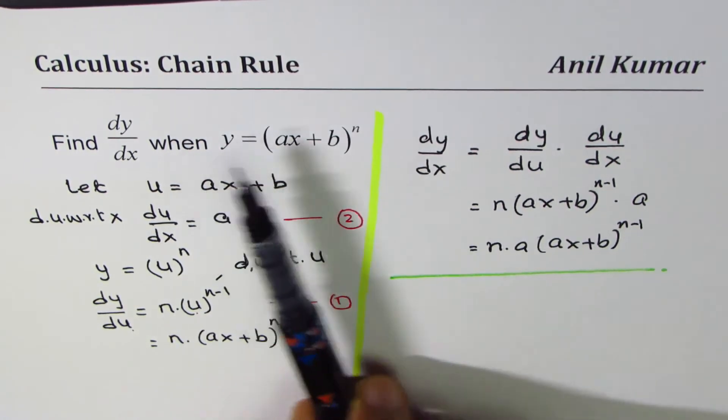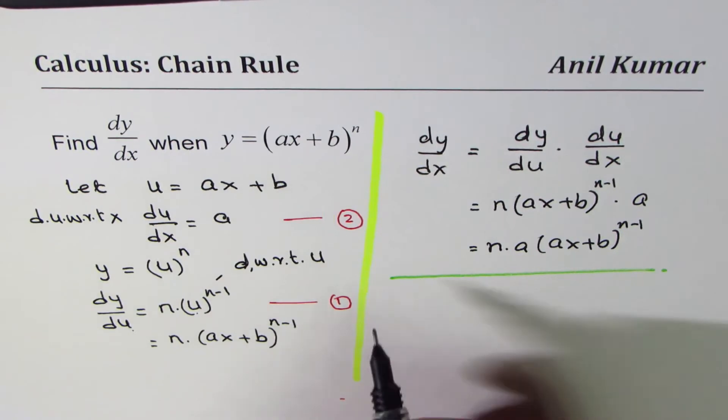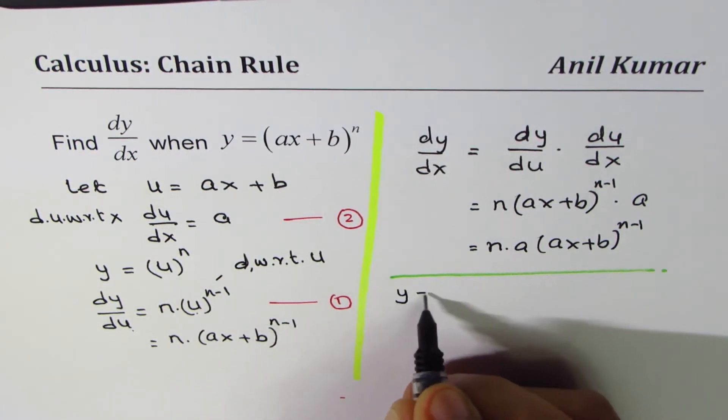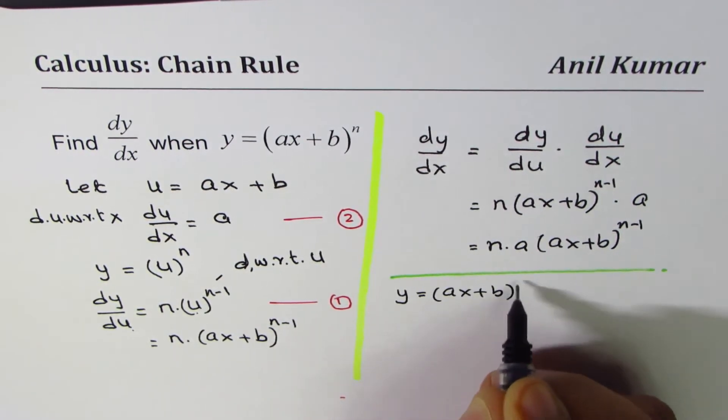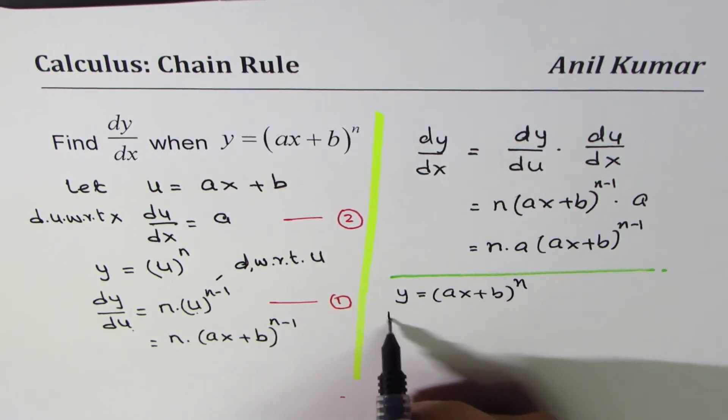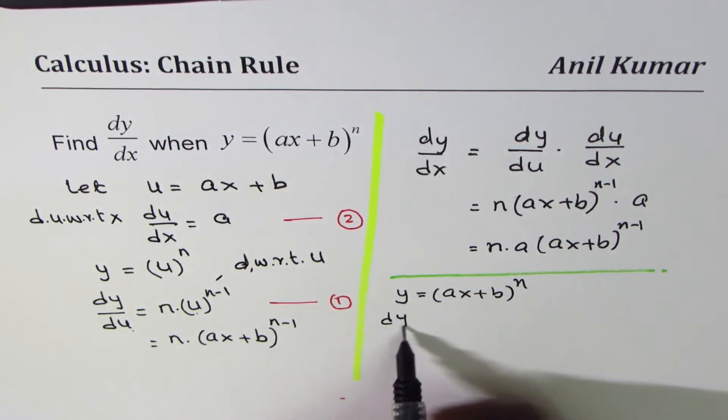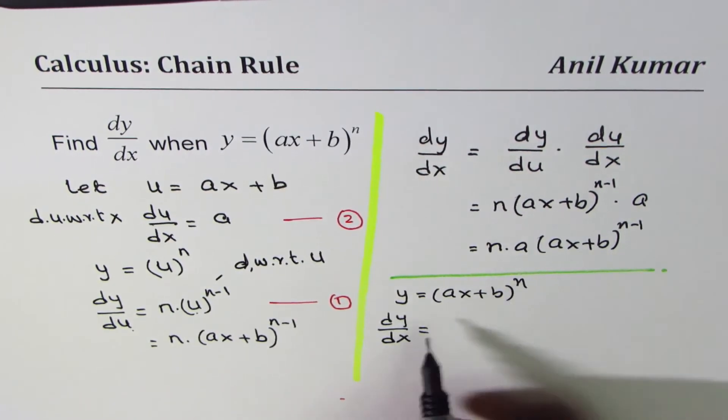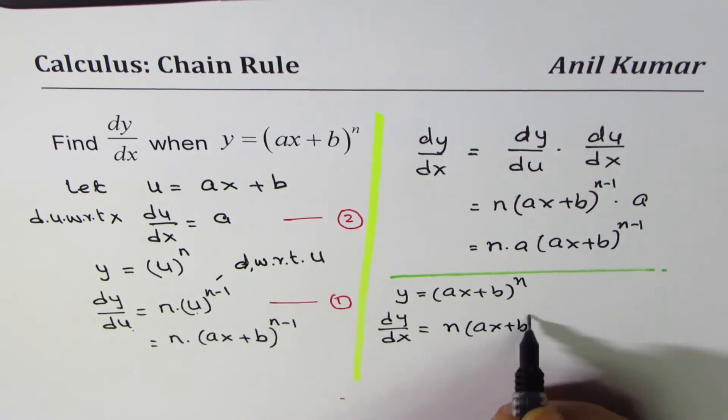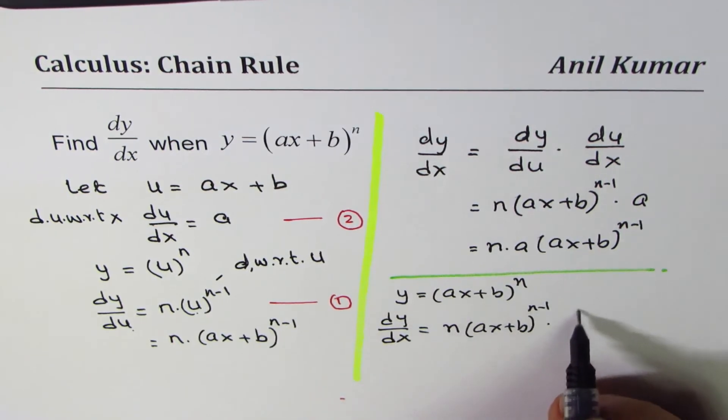Now, let me show you this in shortcut method. We were given y equals to ax plus b to the power of n. And if I differentiate directly y with respect to x, I'll apply the power rule and I get n times ax plus b to the power of n minus 1 times derivative of inside function.